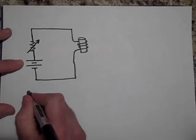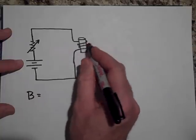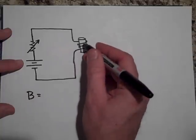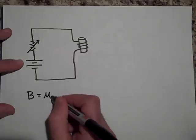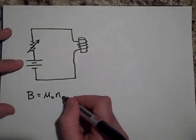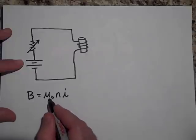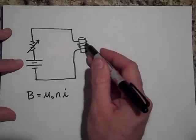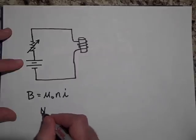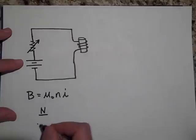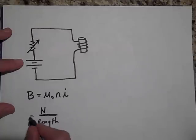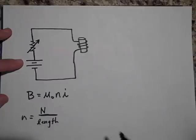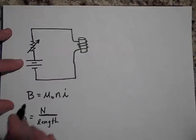The magnetic field in a solenoid — if it's tightly wrapped with many windings and you're at the center — is going to be μ₀ times n times I, where μ₀ is the permeability of free space, n is the turn density (how many turns per unit length), and I is the current flowing through it. This is derived in a separate video on Ampere's law.